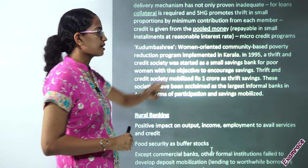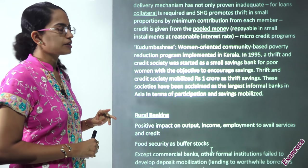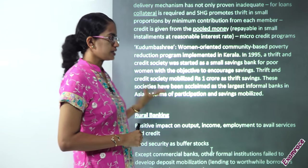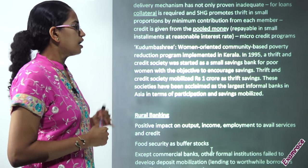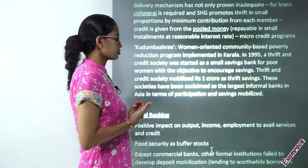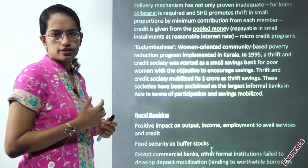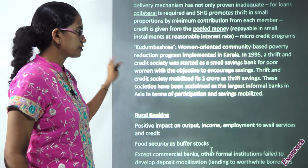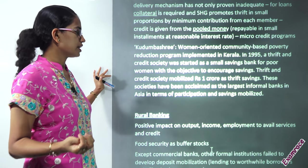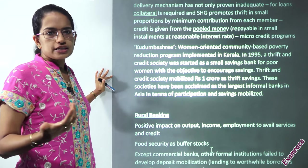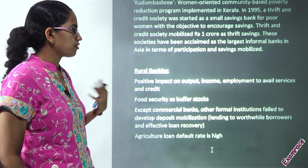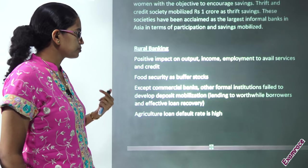Kudumbashree is a women-oriented community-based poverty reduction program that was started in Kerala. It is basically a kind of credit society helping poor farmers come up with the objective of saving, with a thrift and credit society mobilized for thrift savings. This was an important achievement — a kind of non-formal bank — where large-scale participation of women and people in that region along with savings mobilized this program.